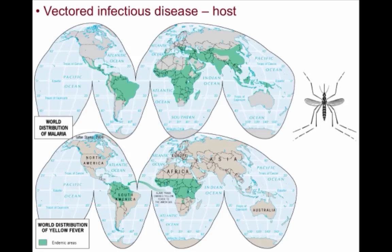Looking at vectored infectious diseases, starting with malaria — an old tropical disease that kills more than 1 million people annually and infects about 300 million people. It is transmitted by an intermediary vector, in this case a mosquito. The mosquito stings an infected host and sucks up blood carrying parasites. The parasites multiply in the mosquito, and when it stings again, the parasites are injected into a person's bloodstream, making them sick. No disease in human history has taken more lives than malaria.